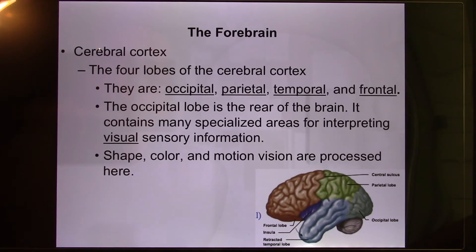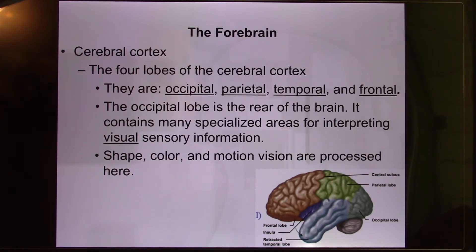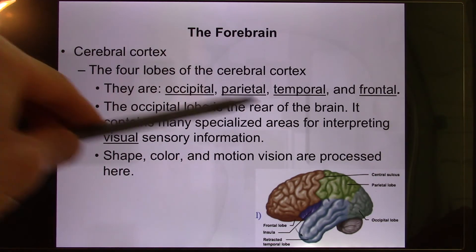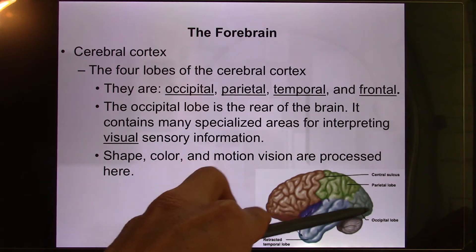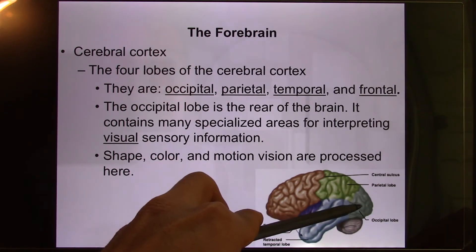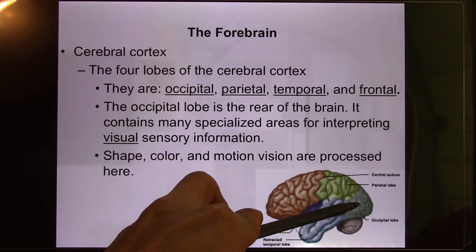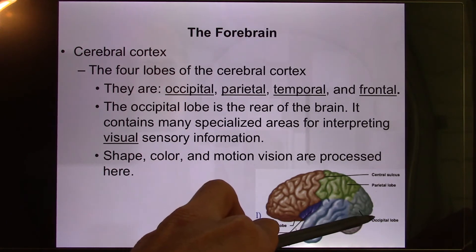The cerebral cortex is divided into different lobes, each with their own function. There are four main lobes. The occipital lobe is where your visual function is. If you hit someone on the back of the head, they see stars — that's because those neurons fire. That's the occipital lobe.